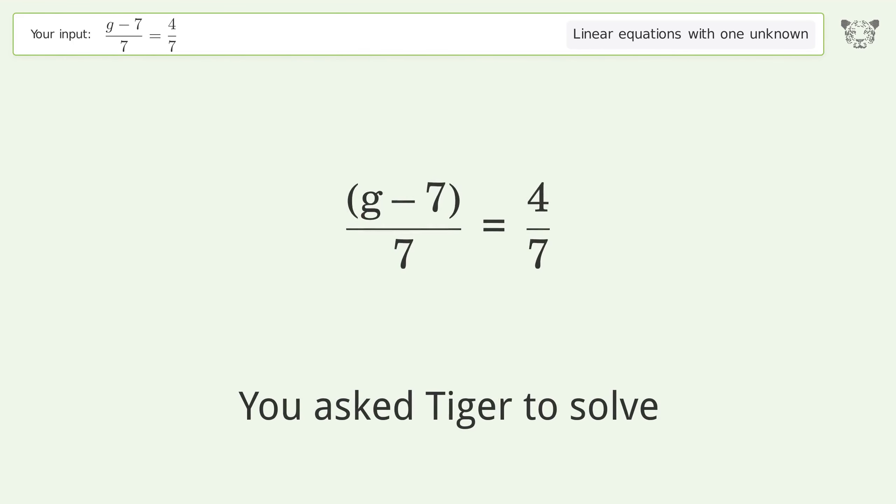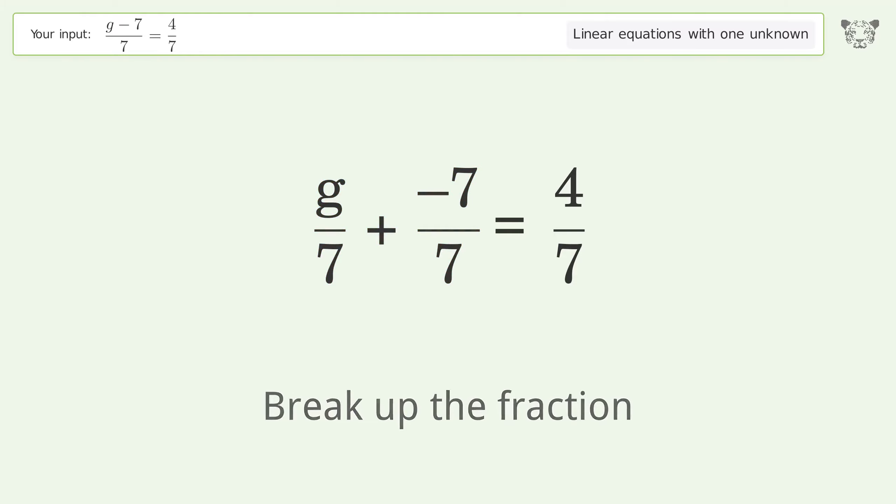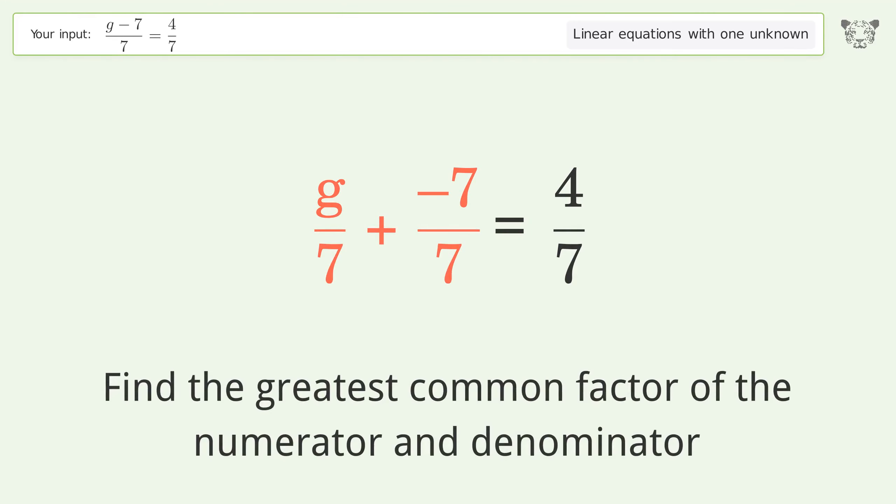You asked Tiger to solve this deals with linear equations with one unknown. The final result is g equals 11. Let's solve it step by step. Simplify the expression, break up the fraction, find the greatest common factor of the numerator and denominator.